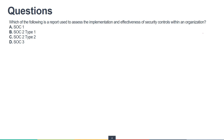Next question: Which of the following is a report used to assess the implementation and effectiveness of the security controls? SOC 1 is for financial statements, SOC 2 is for security controls, and SOC 3 is for general use. The keyword is 'effectiveness of security controls,' so we're left with SOC 2. Between Type 1 and Type 2, since we need effectiveness, the correct answer is SOC 2 Type 2.